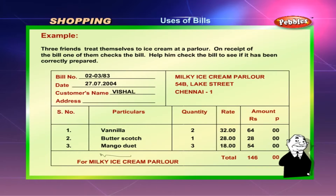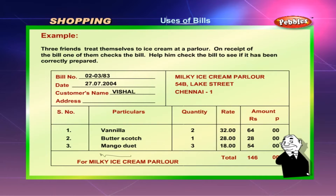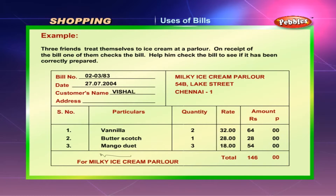Example: Three friends treat themselves to ice cream at a parlor. On receipt of the bill, one of them checks the bill. Help him check the bill to see if it has been correctly prepared.